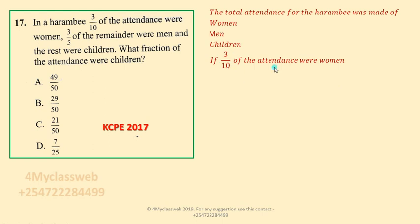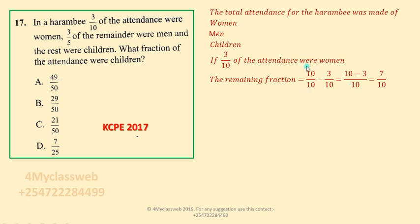Now we need to calculate the remaining fraction. Three tenths of the attendance were women. To get the remaining fraction, you take the fraction for the whole meeting — which is just one — and then you subtract the attendance for women. Since we are taking 10 out of 10 to represent one, you subtract three tenths. The denominator here is 10, so the LCM remains 10.